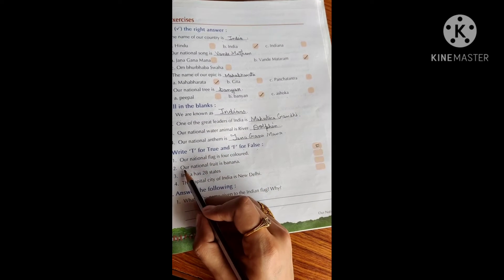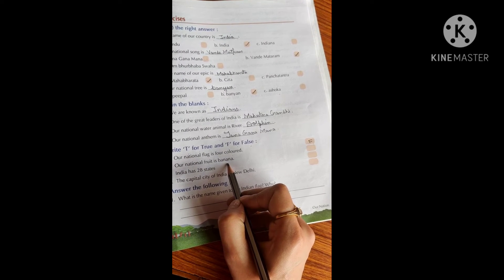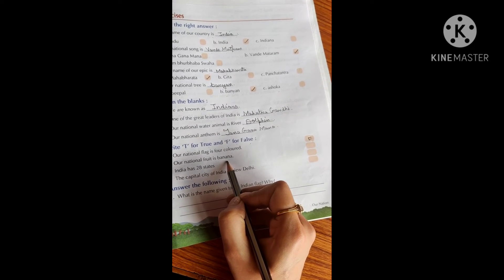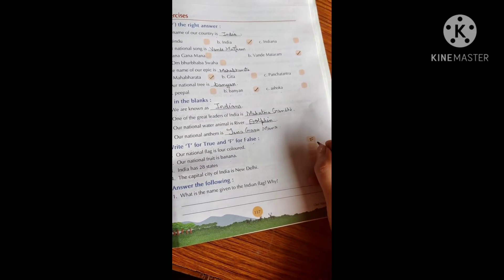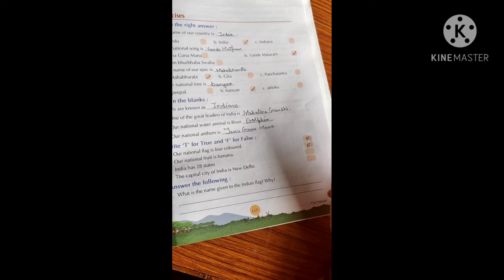Next is our national fruit is banana. So is this true? Our national fruit is banana? No, our national fruit is mango. So we will write F here because it's false.